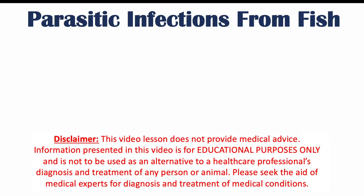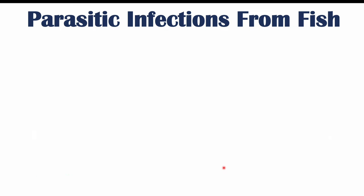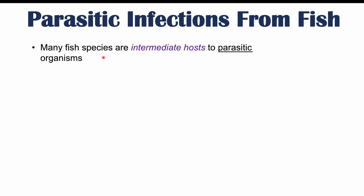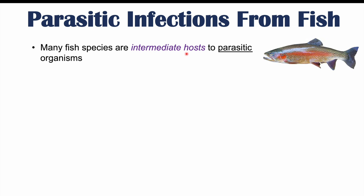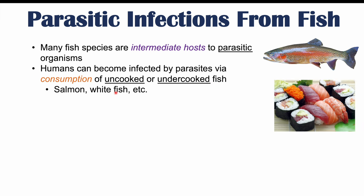This lesson is on three parasitic infections we can get from eating uncooked or undercooked fish. Many fish species are intermediate hosts to parasitic organisms, which is why we can get parasitic infections from fish. Humans become infected through consumption of uncooked or undercooked fish — including salmon and whitefish — and from eating sushi, sashimi, fish tartar, and other dishes, especially if those fish products haven't been handled properly.